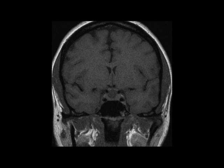This is a 32-year-old female who presented with bitemporal hemianopsia. These images demonstrate a well-circumscribed, round, mildly T1 hypointense mass arising within and expanding the sella turcica.